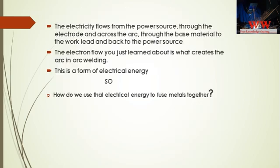In welding, when we switch on the power source, electricity flows through the electrode to the welding arc, to the base metal, and back to the power source — completing the electric circuit. In the welding arc, the electrical current is converted to heat because of resistance. This heat melts the base metal and electrode to make the weld joint.